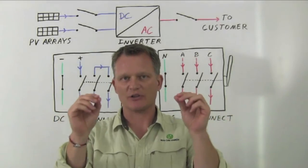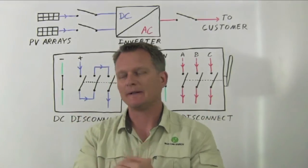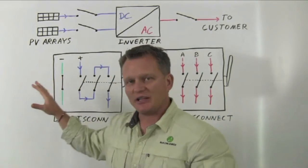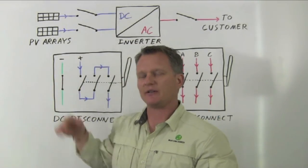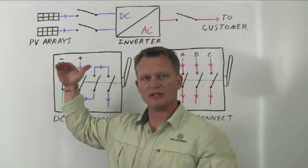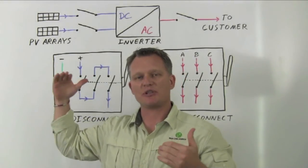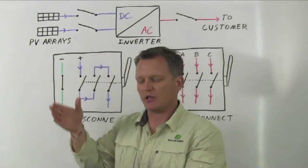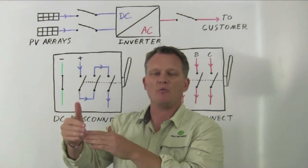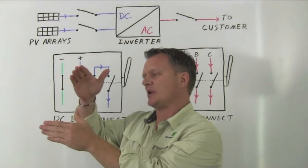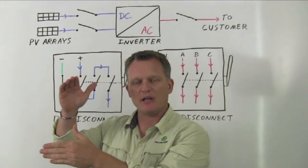That's not the case with DC current. A DC current is a constant value and stays persistent. When you open up a DC disconnect switch, an arc forms and it wants to continue, and you have to open it with even a larger air gap to get it to extinguish.